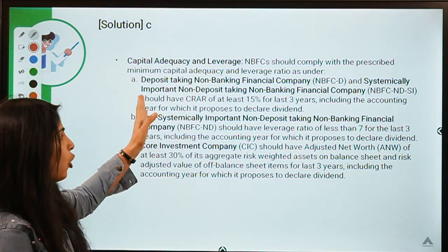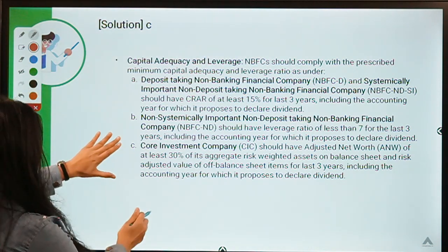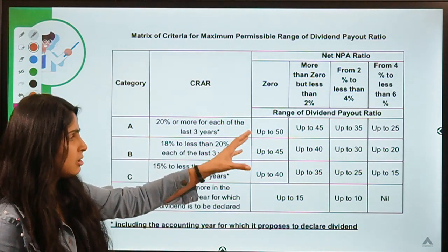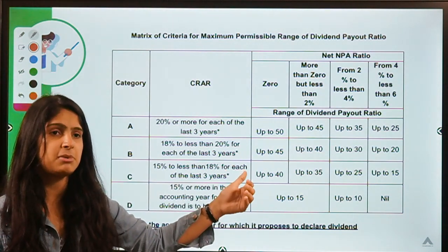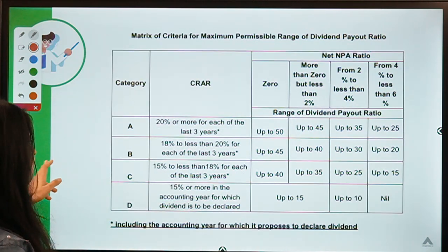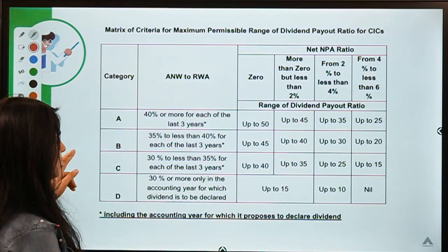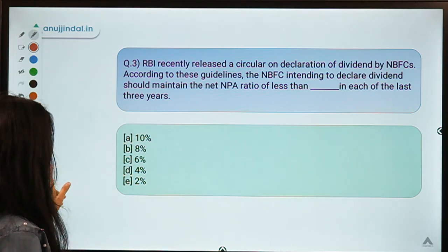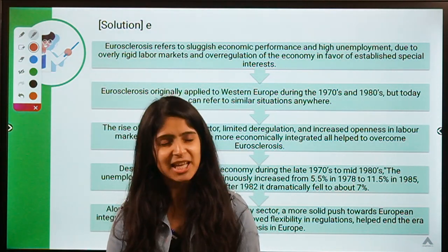In relation to that, we also studied this matrix — how NBFCs are placed into certain boxes and according to those parameters RBI will decide how much an NBFC is allowed to pay as dividend. You can take a screenshot of these two matrices for future use. I'll see you in the next session. Till then, take care of yourselves, keep your studies going on, and thank you for being here.